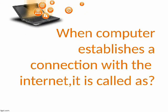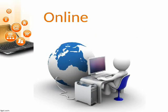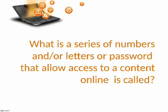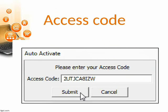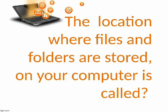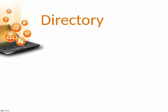When a computer establishes a connection with the Internet, it is called Online. What is a series of numbers and/or letters or password that allows access to content online? Access Code. The location where files and folders are stored on your computer is called Directory.